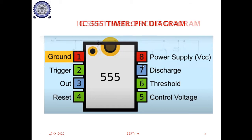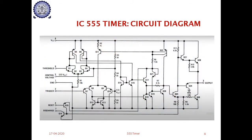The internal schematic of the 555 timer is very complex. It contains totally 25 transistors, 2 diodes, and around 15 resistors in the total schematic circuit. Students do not need to worry about this complex circuit. Since the same circuit is available in IC form, we should make use of this IC to build a variety of applications.